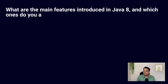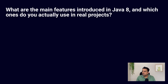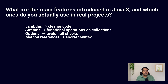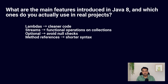Question number one: what are the main features introduced in Java 8, and which ones do you actually use in your real project? Java 8 introduced a lot of features and changes, but most commonly we use Stream APIs and Lambda expressions. Lambda helps to reduce boilerplate code, especially in filtering and mapping operations, while streams allow us to process collections in a functional style. We also use the Optional class to avoid null checks. Method references make the code cleaner, and default and private methods in interfaces were also introduced.